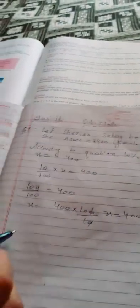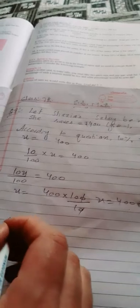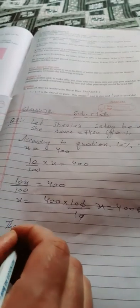What is her salary? This equals 400 times 100 divided by 10, which equals 4000. Therefore, her salary is 4000 rupees. That is the answer.